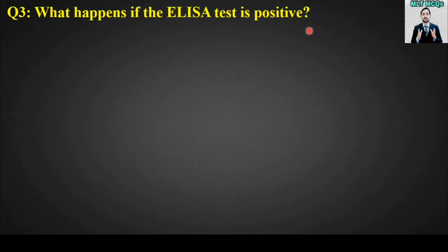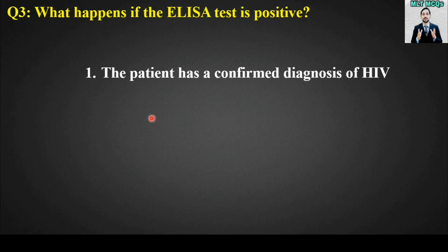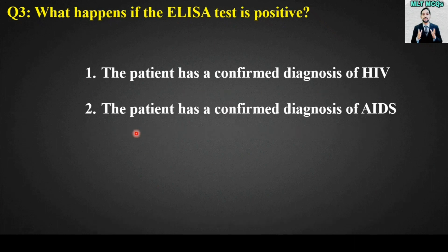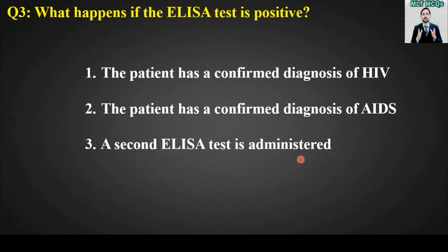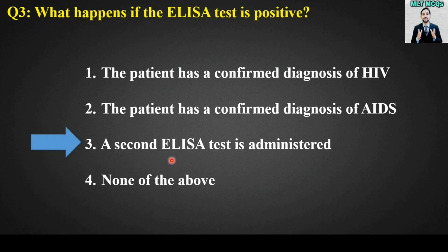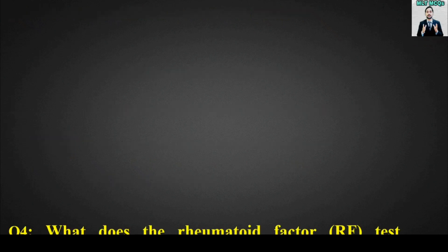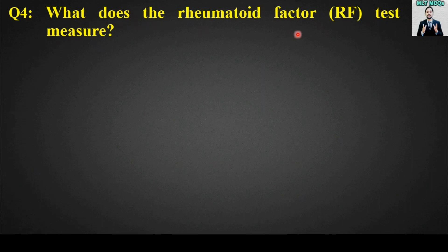MCQ number 3: What happens if the ELISA test is positive? Options are: the patient has a confirmed diagnosis of HIV, the patient has a confirmed diagnosis of AIDS, a second ELISA test is administered, or none of the above. The right answer is option number 3 — a second ELISA test is administered.